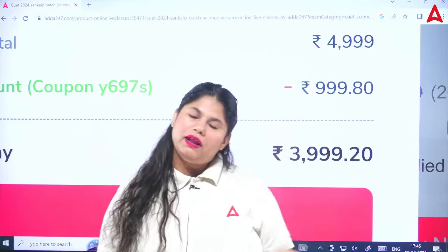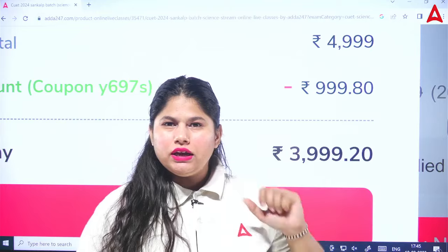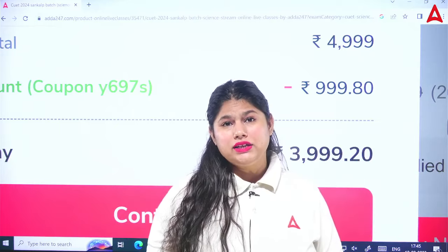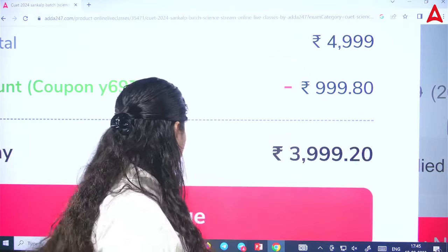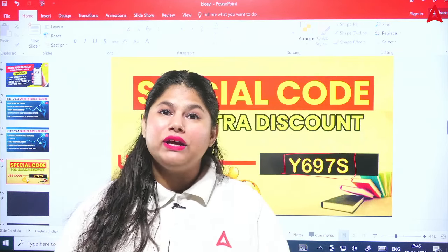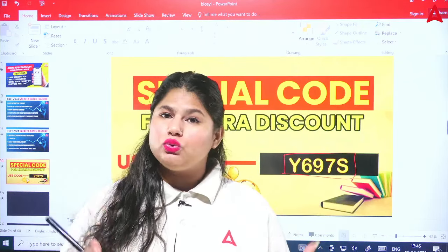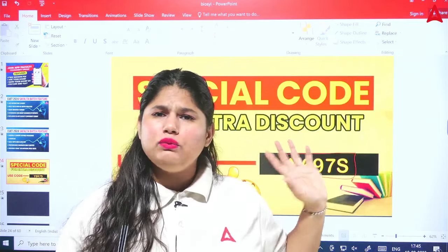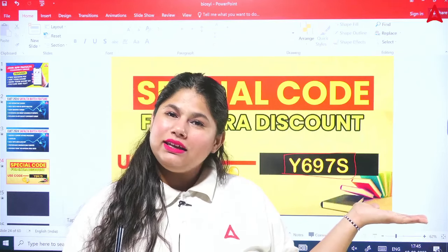You will study all things — domain, English GT, e-books, notes — everything for only 4,000. So share and use code Y697S. In the next session I will tell you how to score 100% in science and how to study. Subscribe to this channel, go to the video section to see study sessions, and if you are in my Telegram group, share it. Stay connected, bye!